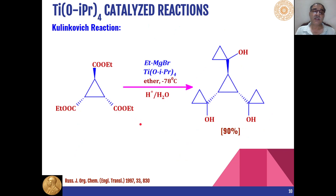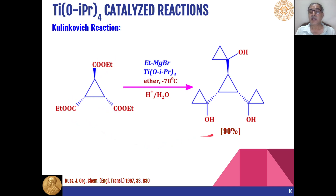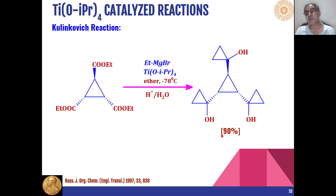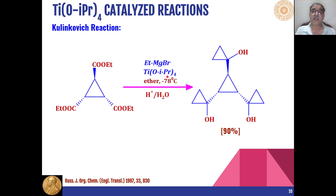In another example of the Kulinkovich-de Meijere reaction, a molecule containing three ester groups is used, and in all three cases the ester groups are converted into cyclopropanols. 90% of the product is stereoselective in nature and is formed during the conversion of this substrate in the presence of titanium tetra-isopropoxide and Grignard reagent.